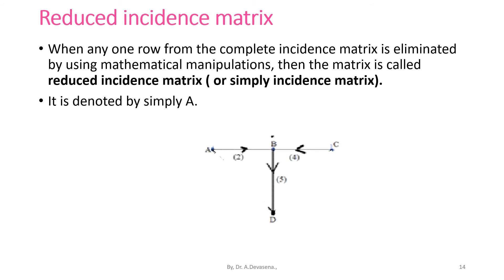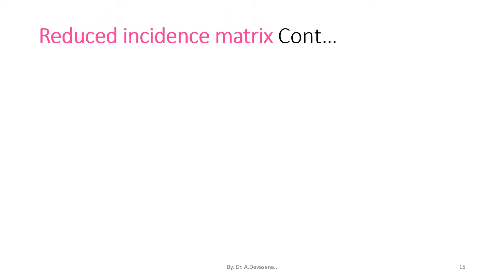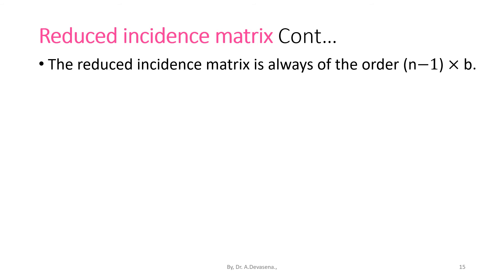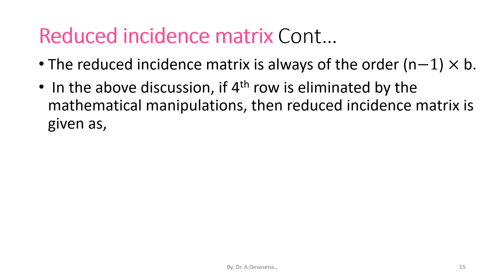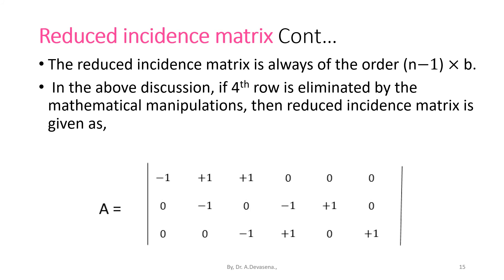When any one row from the complete incidence matrix is eliminated by using mathematical manipulations, then the matrix is called the reduced incidence matrix, or simply incidence matrix, denoted by capital A. The reduced incidence matrix is always of the order N minus 1 cross B. If the fourth row is eliminated, the reduced incidence matrix has three rows only: row A, row B, and row C.